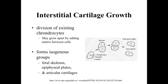There are two types of cartilage growth. The first is interstitial cartilage growth — growth from within. Chondrocytes within the cartilage matrix divide, going from a single chondrocyte in a lacuna to an isogenous group. These cells within the isogenous group can then grow apart by forming cartilage matrix between them, pushing themselves away from one another by adding new cartilage in between. This interstitial growth is characteristic in areas like the fetal skeleton, epiphyseal plates, and articular cartilages.